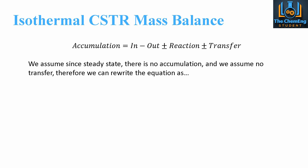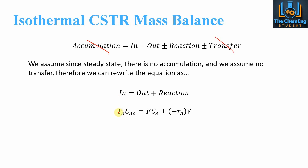We assume steady state conditions, so what comes into the system will leave the system — there is no accumulation, so we can neglect that term. We'll also assume there is no mass or energy transfer to the system, so we can rewrite this as: input equals output plus the reaction. We can express this as F0·CA0, the initial flow rate times initial concentration, equals the outlet flow rate times outlet concentration, plus or minus the rate of reaction multiplied by the volume.